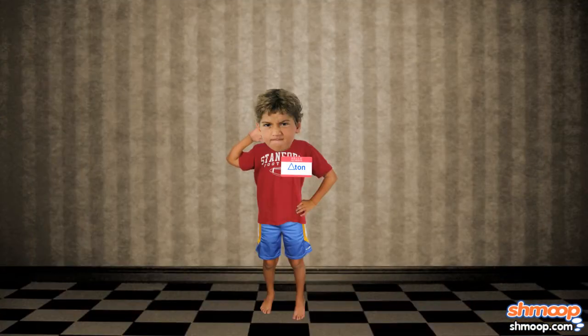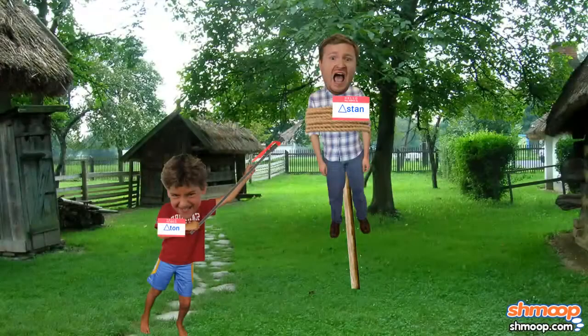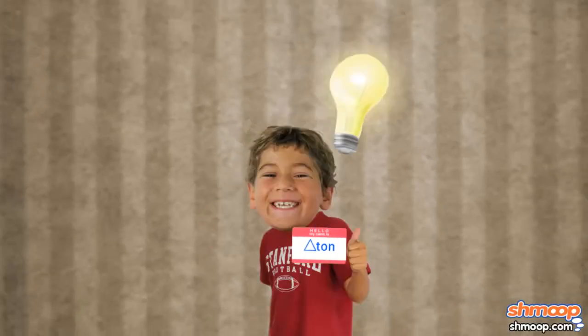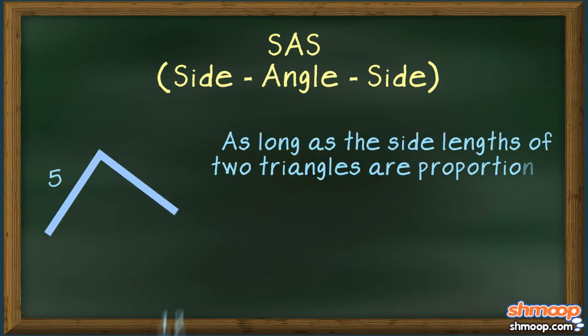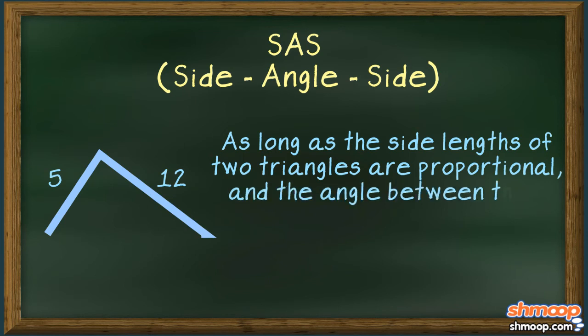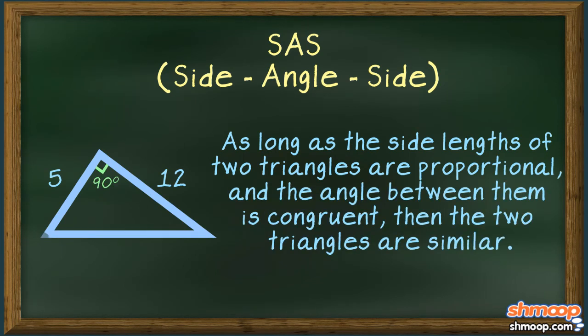It was, admittedly, a tad unfair that the youngest brother was given the toughest triangle, but Triton has never been one to shy from a challenge. Eventually, he recalled the side-angle-side rule. Namely, that as long as the side lengths of two triangles are proportional, and the angle between them is congruent, then the two triangles are similar.